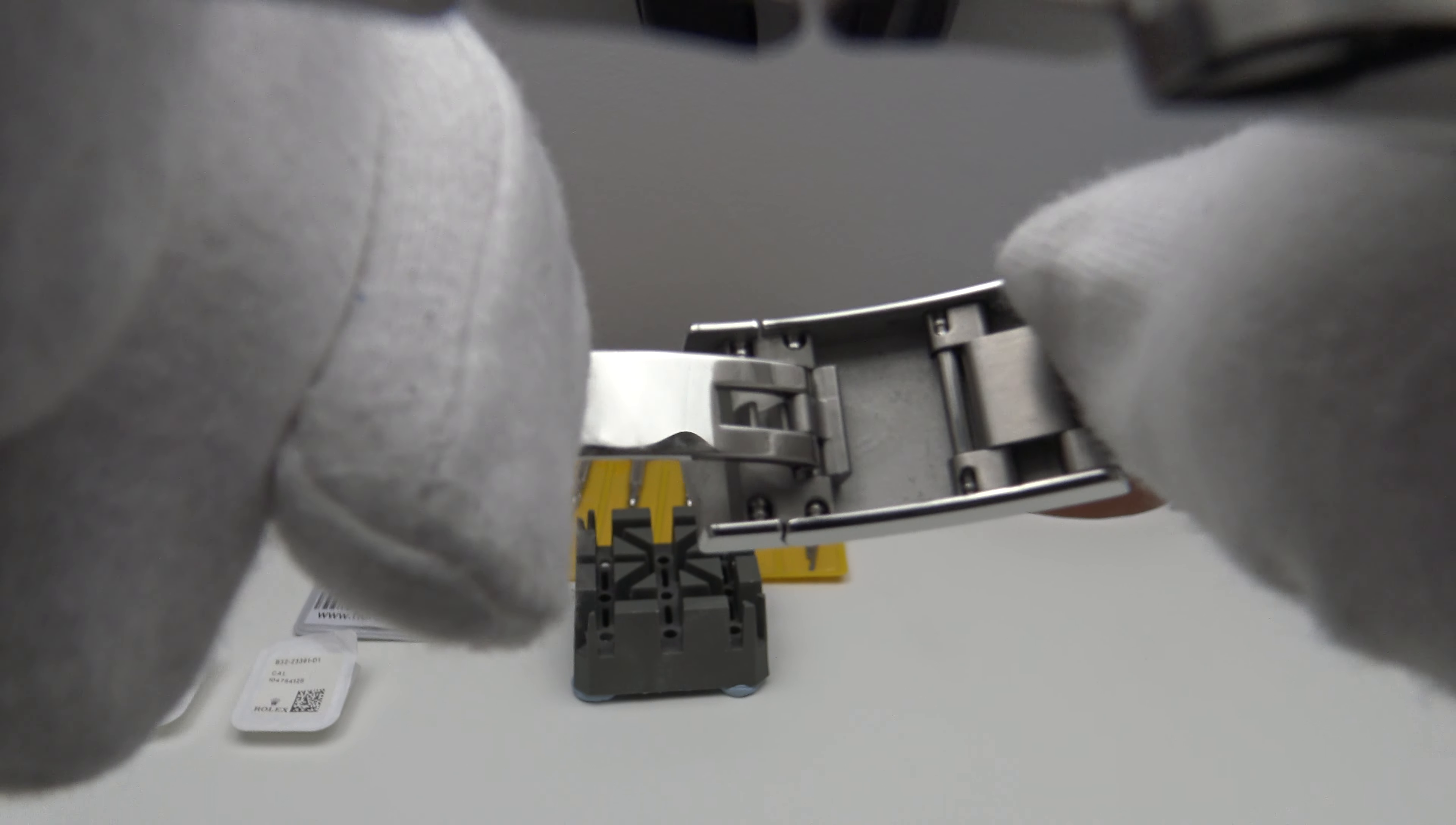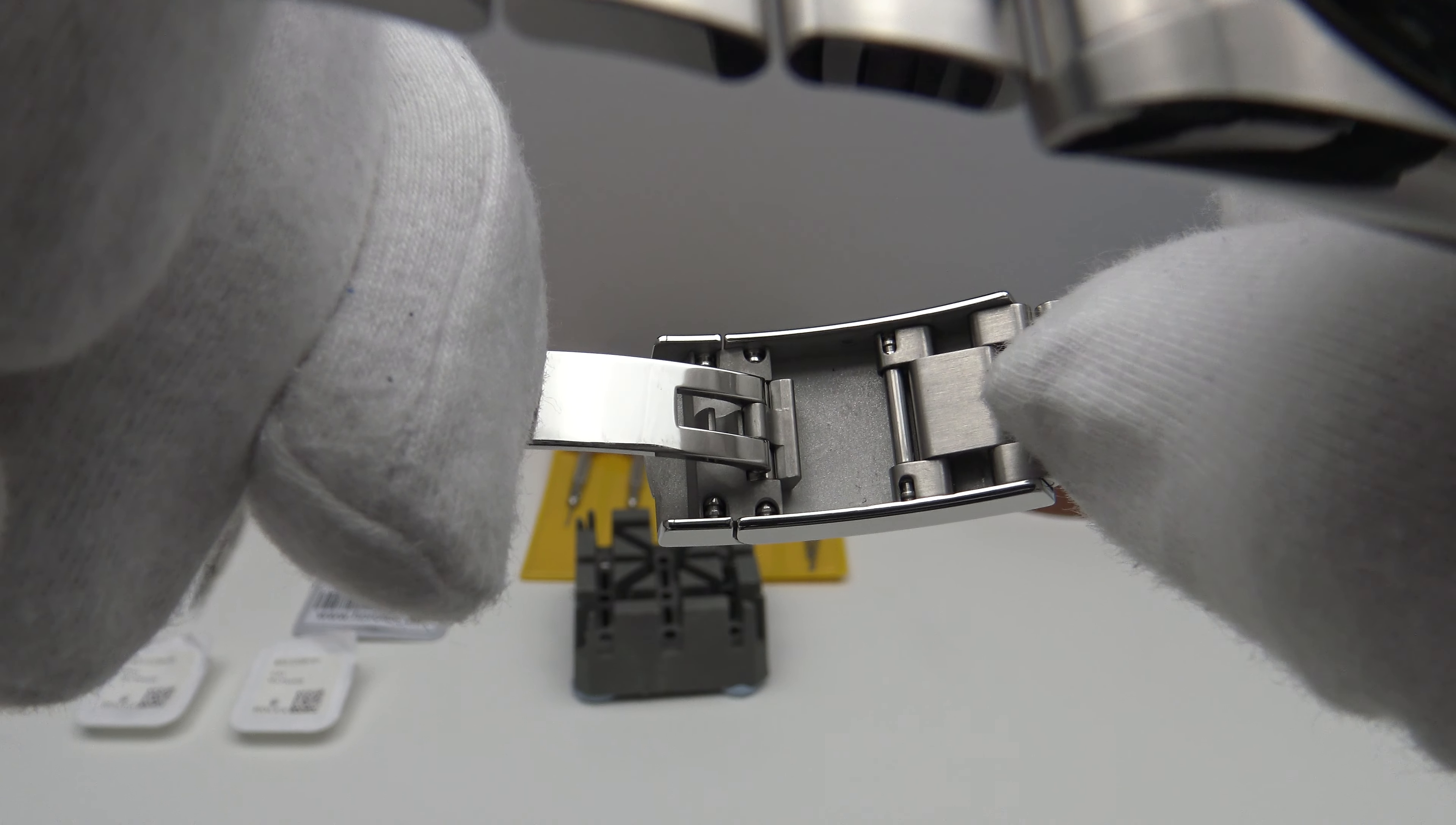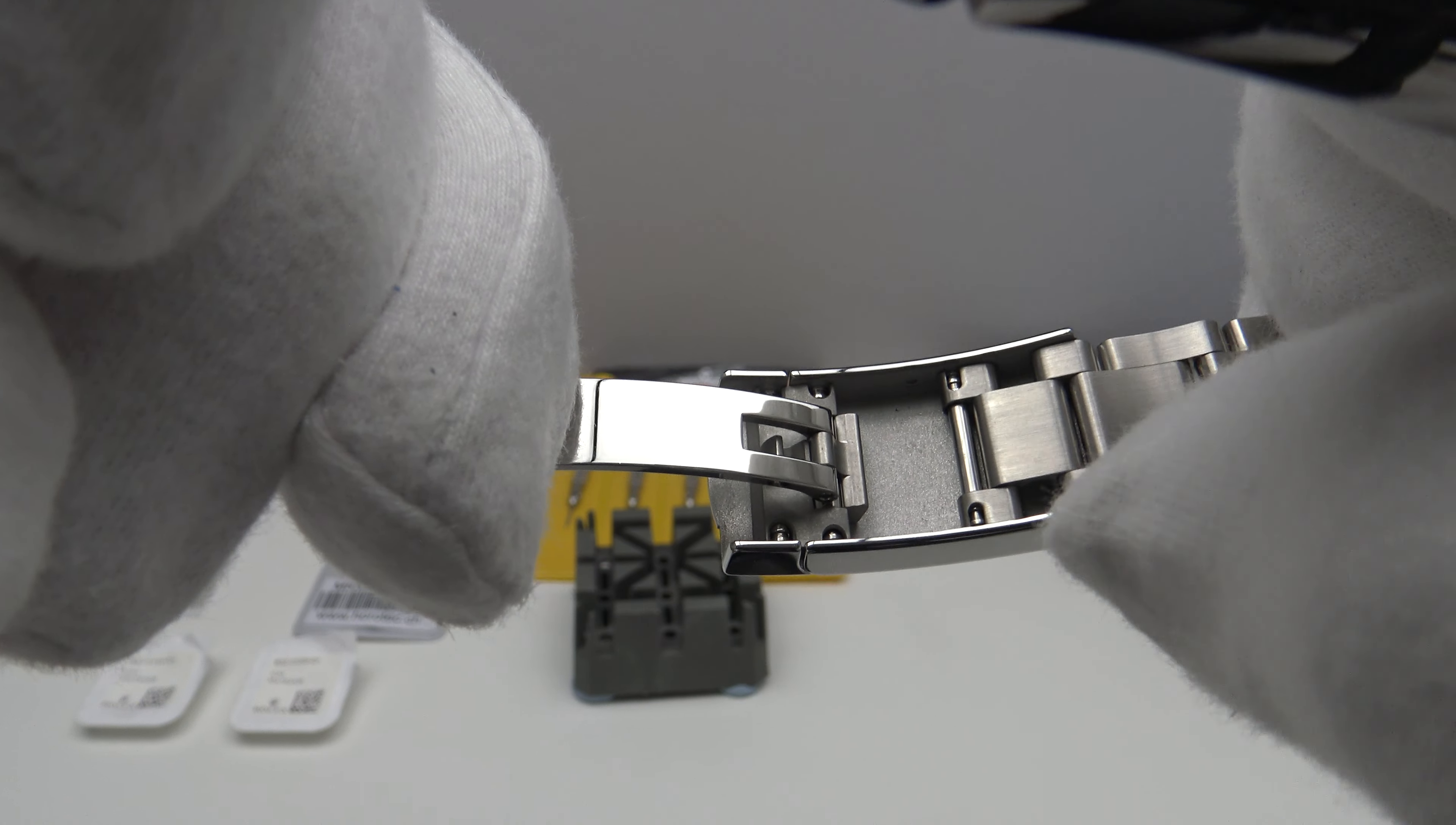So there are two slots inside and one presses in the spring bar either end and then one can move the easy link extension in or out by three notches. There are three dimples either side.